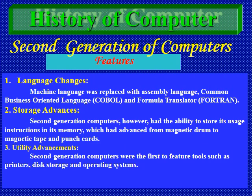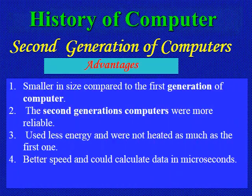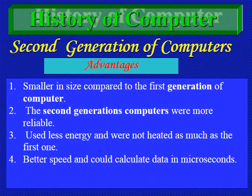The advantages of second generation computers include: smaller in size compared to first generation, more reliable, and they use less energy. The disadvantages include: still big in size, used for very specific purposes, and commercial production was difficult.